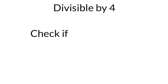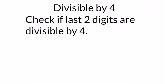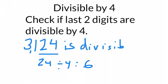To see if a number is divisible by four, check if the last two digits are divisible by four. Is 3,124 divisible by four? All you need to do is check the last two digits, which make the number 24. Since 24 is divisible by four, the whole number 3,124 is divisible by four.